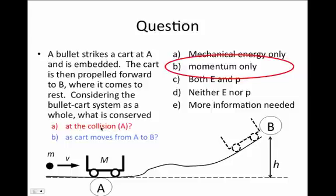Now, as the cart goes from A to B, the cart and the bullet do not define an inertial system because there is a net external force acting on them from the force of gravity pulling down.